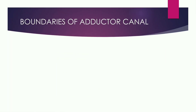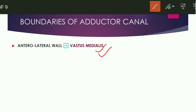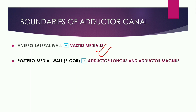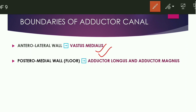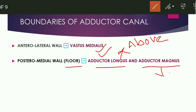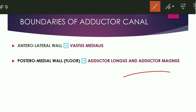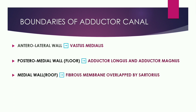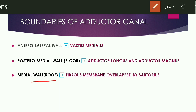From this diagram you can easily see that the Adductor Canal is located on the medial side of the thigh. Now the boundaries of the Adductor Canal: the anterior lateral wall is formed by Vastus Medialis. The posteromedial wall or floor is formed by Adductor Longus and Adductor Magnus — Adductor Longus lies above and Adductor Magnus lies below. The medial wall or roof is formed by a fibrous membrane.